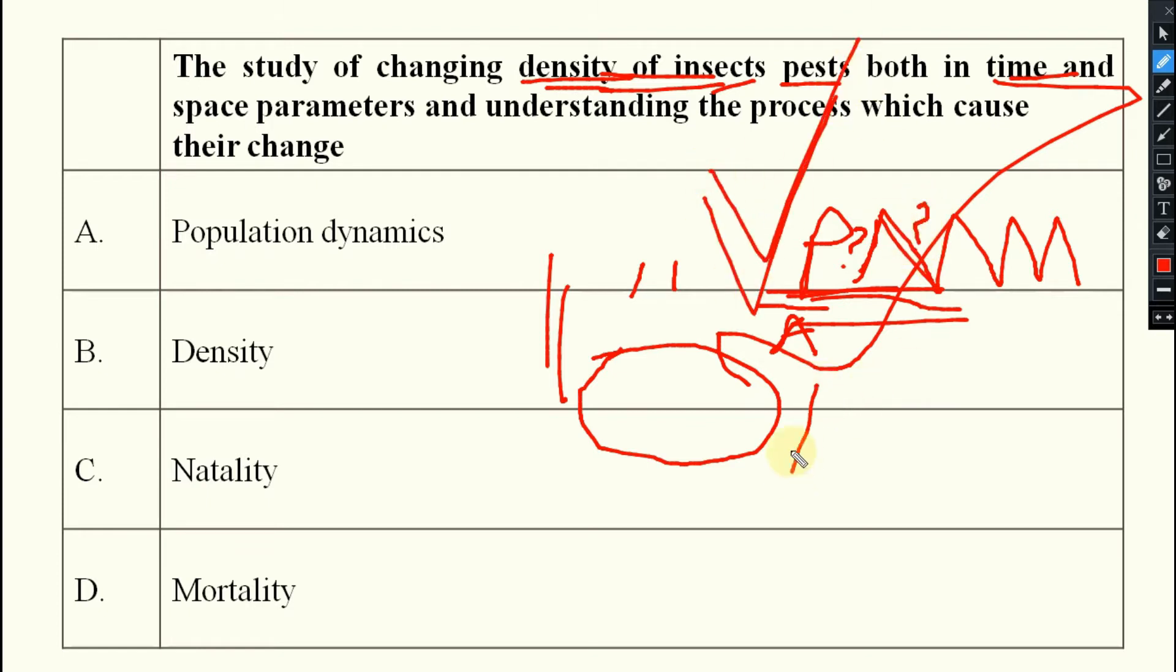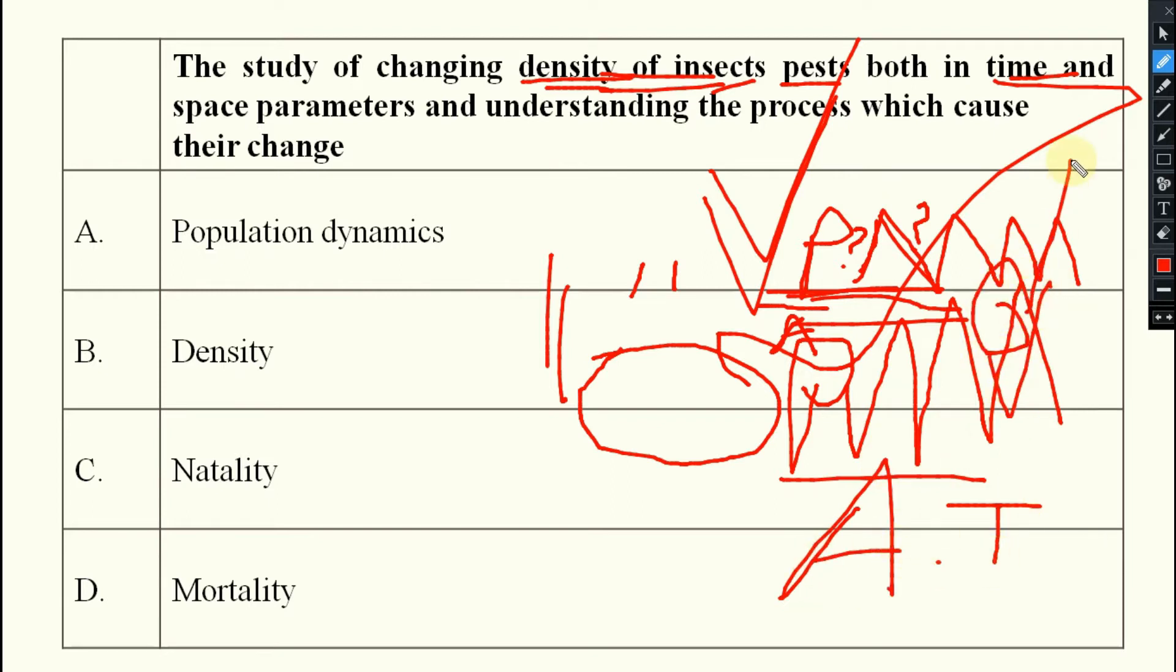What is this? They are asking: a population is there, its frequency is changing in a unit area, in a unit time. And what is the reason behind that? If it is increasing, why? If it is decreasing, why? This is known as what? Density, natality, mortality, and population dynamics.